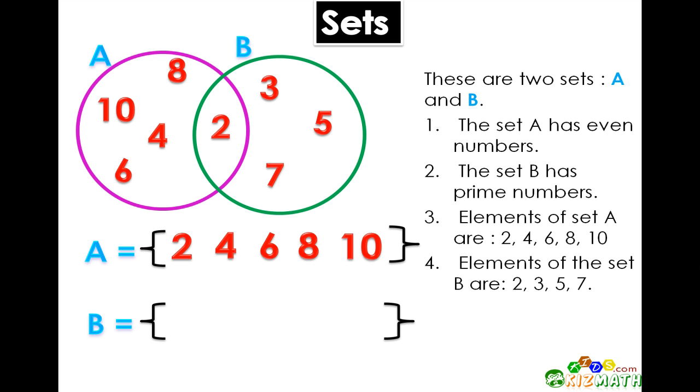Set B consists of prime numbers 2, 3, 5, 7. So we can say set B equals 2, 3, 5, 7.